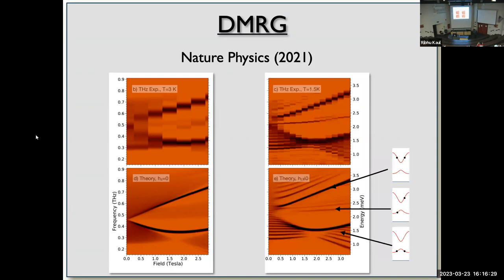The narrowing of the lowest domain-wall bandwidth with increasing transverse field occurs because of the strong-weak hopping structure. At a certain field, the weak bonds carry zero kinetic energy and the domain walls become completely localized. This feature is clearly visible in both the theory and the experiment.